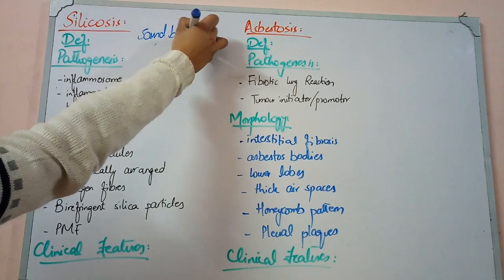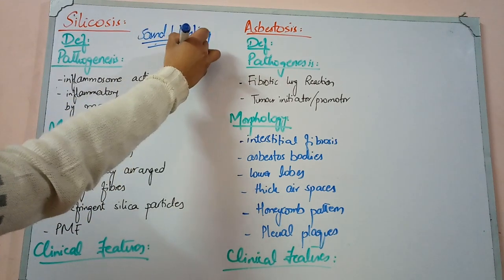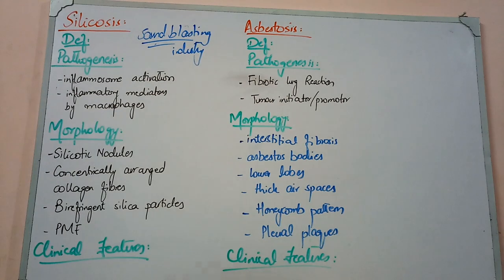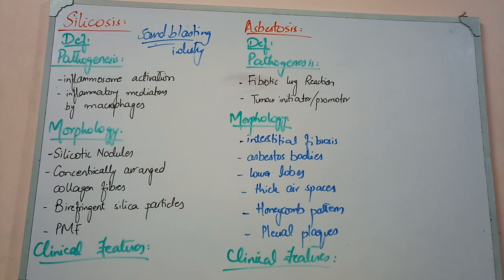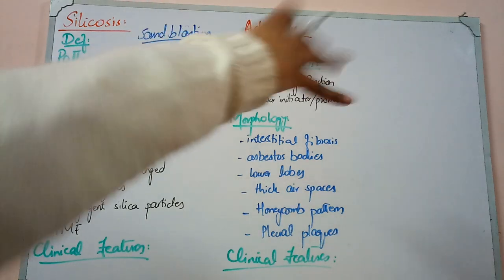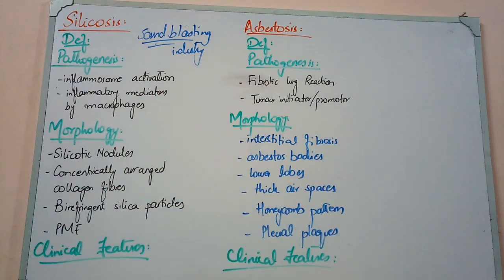The most common presentation is chronic worsening dyspnea, also called shortness of breath, along with cough and sputum. In the lung, you find weakly birefringent nodules and a hyalinized pattern — an onion skin pattern. These are the hallmark findings of this disease. If a patient from the sandblasting industry presents with chronic dyspnea, that means 100% silicosis.